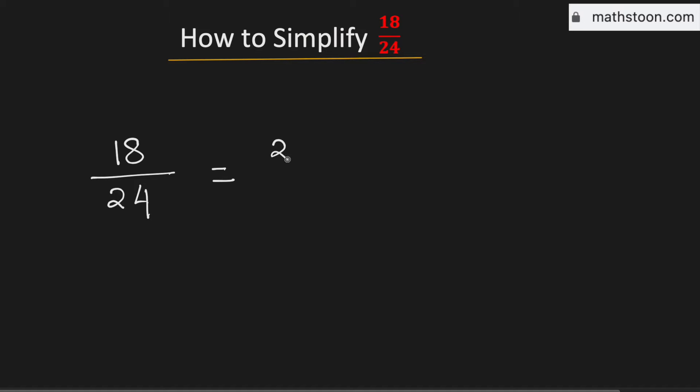Note that 18 can be written as 2 times 9 and 24 can be written as 2 times 12. See that 2 is present in both the numerator and the denominator, so we can cancel it out. Therefore, this is now equal to 9 divided by 12.